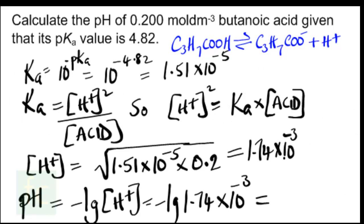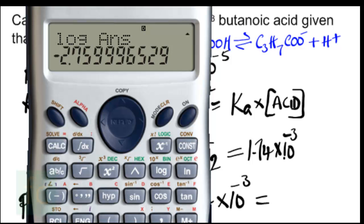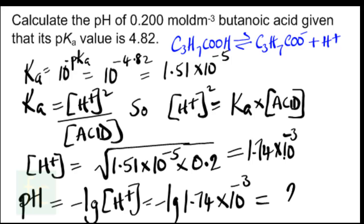With the concentration of hydrogen ions as 1.74×10⁻³ mol dm⁻³, we take the negative log to find the pH. The log of 1.74×10⁻³ is approximately −2.76, so the pH is 2.76, which rounds to 2.8. That's the pH of 0.2 mol dm⁻³ butanoic acid.